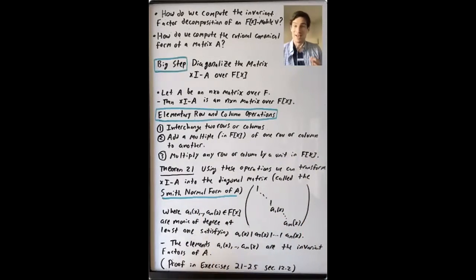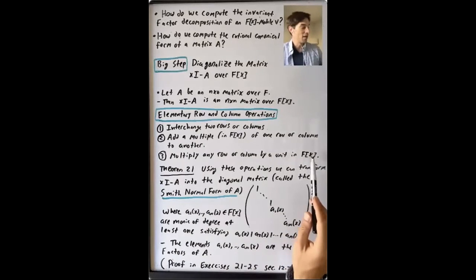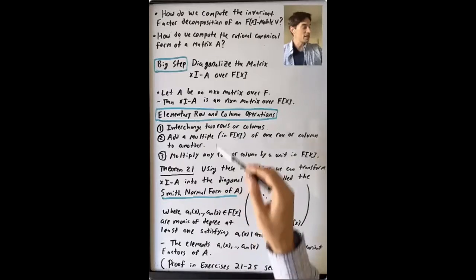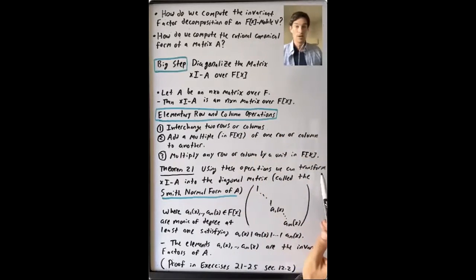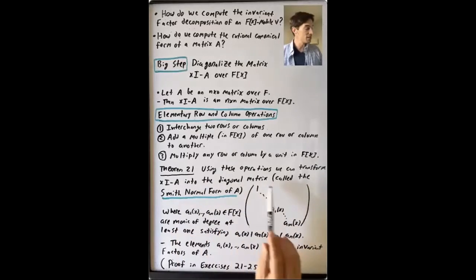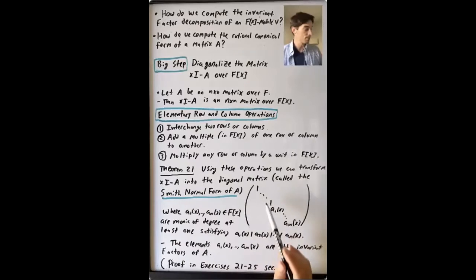So what is a unit in F[x]? It's an element of F*. It's a polynomial of degree zero that's non-zero. And theorem 21 in section 12.2, this last result that we'll talk about, is that using these row and column operations, we can transform the matrix x times I minus A into the diagonal matrix, which is called the Smith normal form of A.